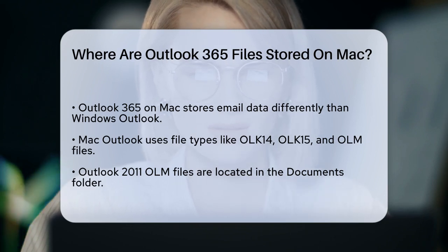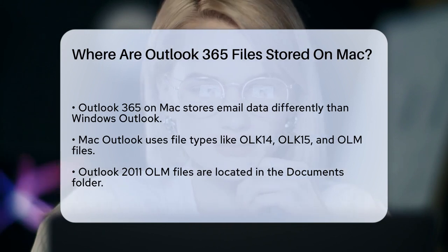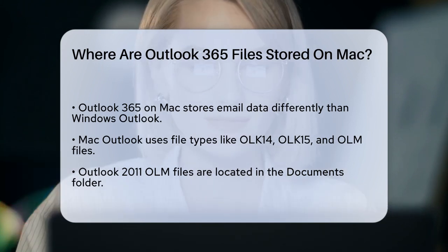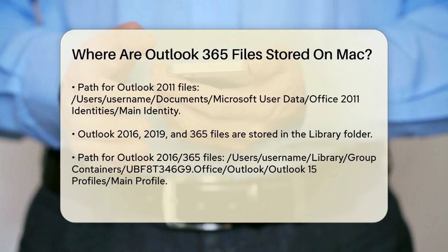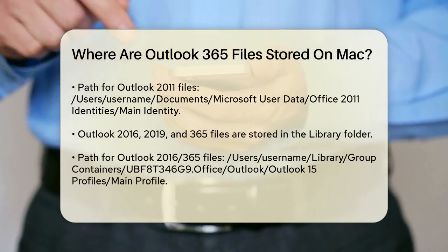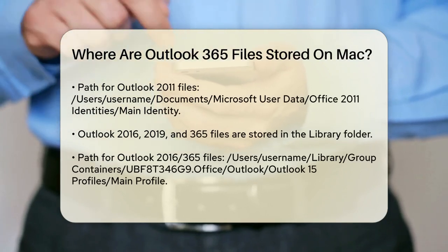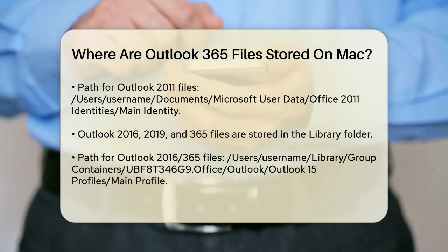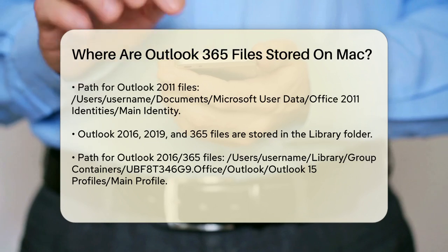For users of Outlook 2011, the OLM files are stored in the Documents folder. Specifically, you can find them at: Users / Username / Documents / Microsoft User Data / Office 2011 Identities / Main Identity.